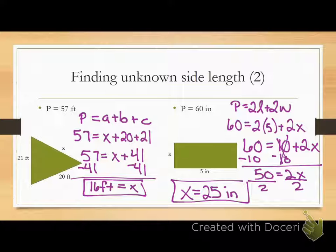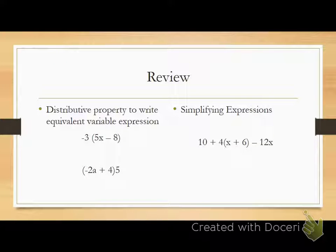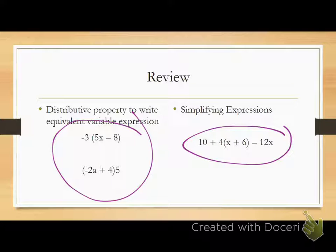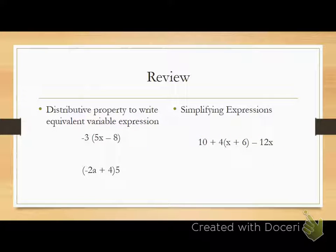Last section of your test tomorrow, and I don't remember specifically how many questions. I think it's like maybe 3 or 4 questions on your test tomorrow, or actually review questions from earlier in Chapter 2. So I want you to write an equivalent variable expression for these two expressions, and then I want you to simplify this expression over here on the right-hand side. So go ahead and solve these three. These will be the last three that we do. Okay, so who thinks they know the answer to the first one? What's negative 3 times 5X minus 8? Nate? Negative 15X plus 24. Very good. Negative 15X plus 24.